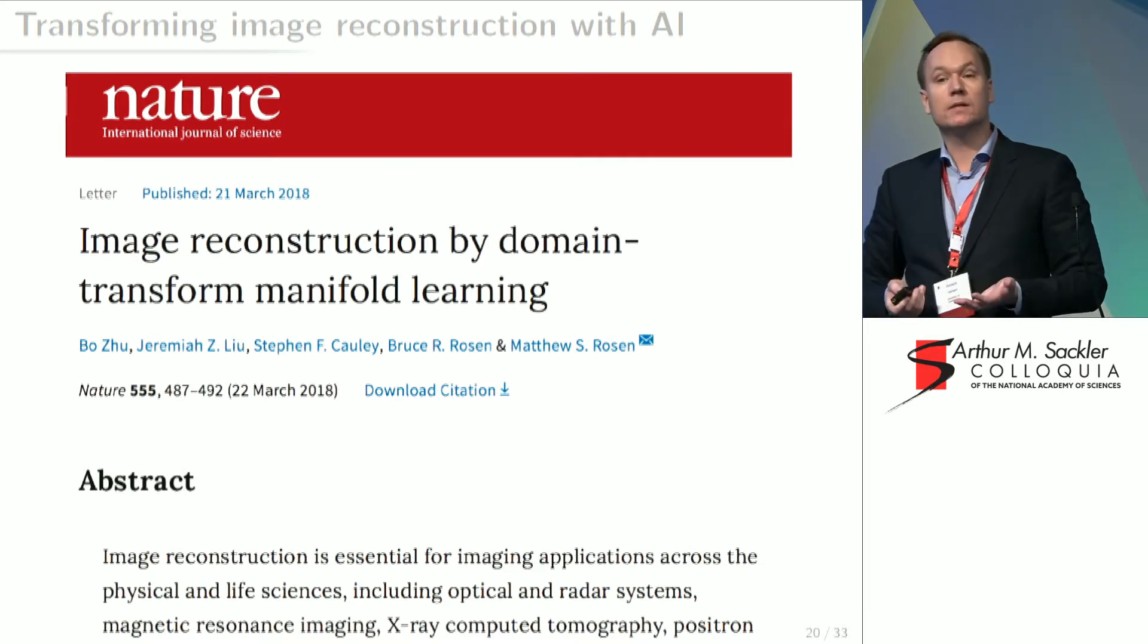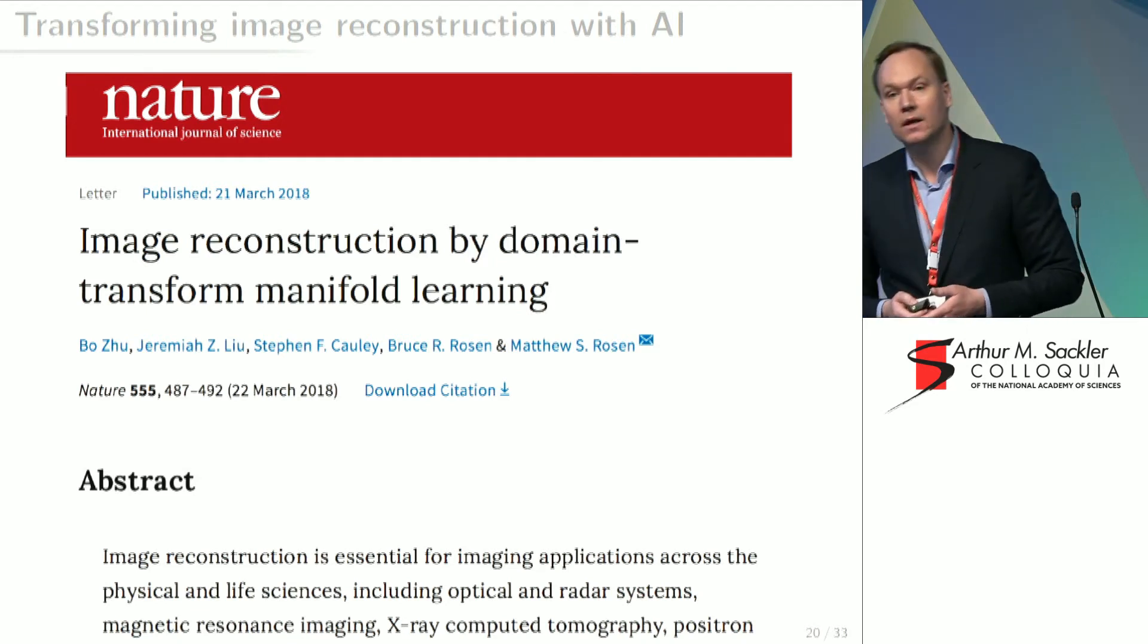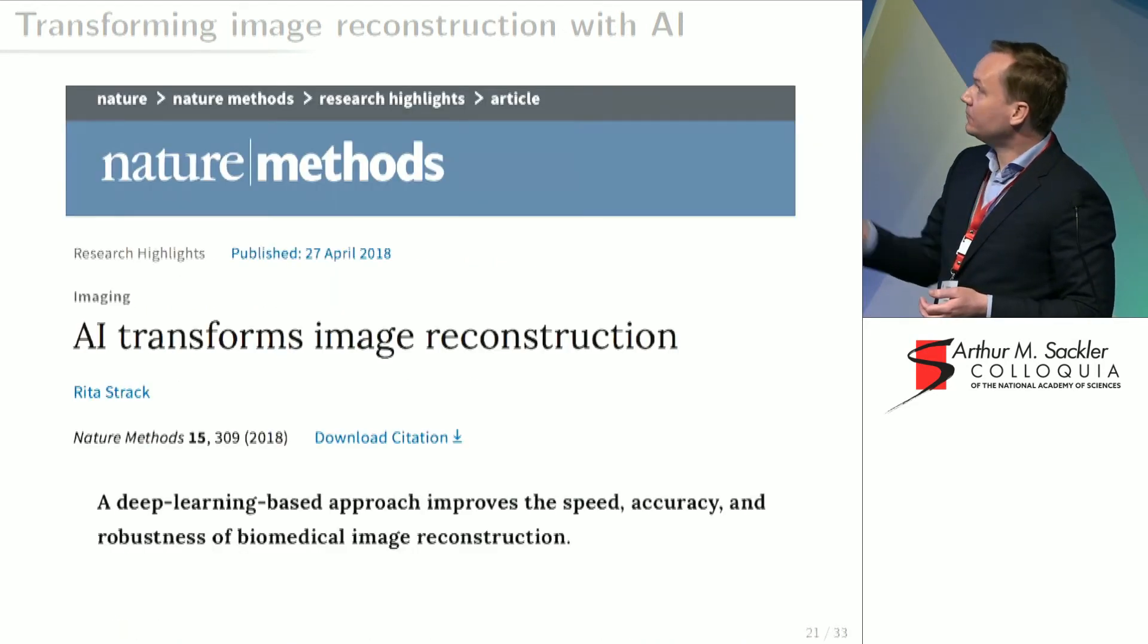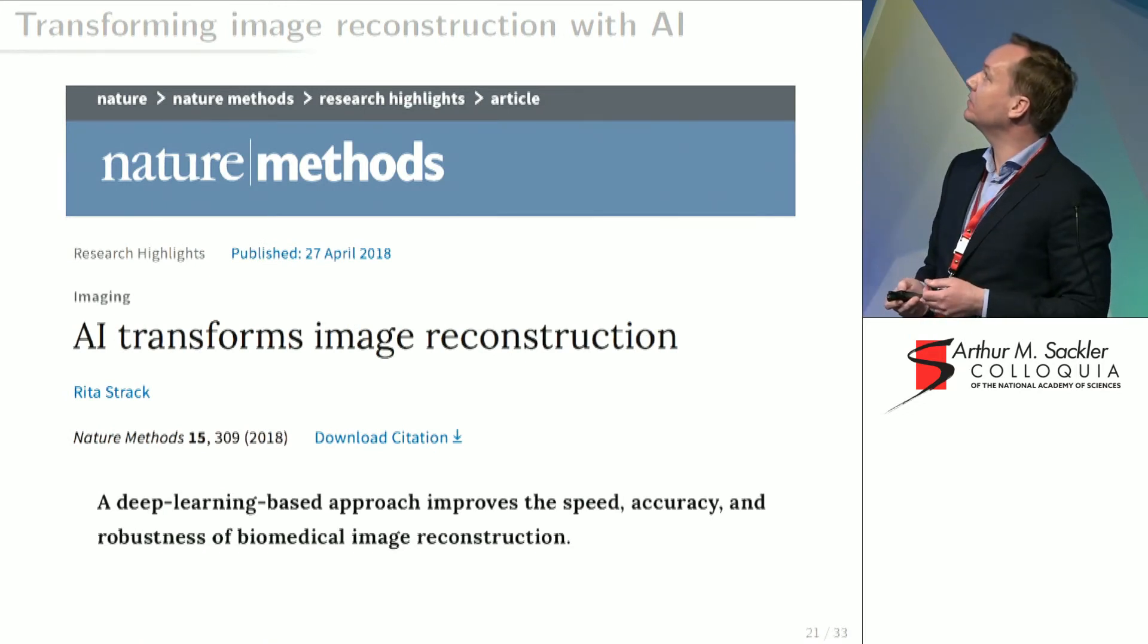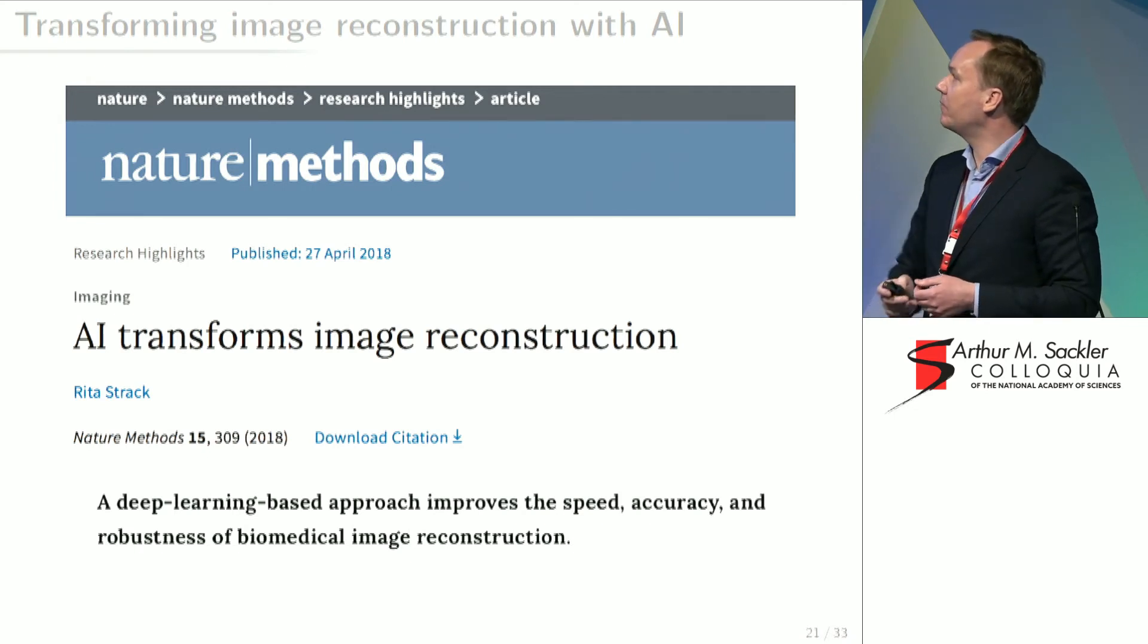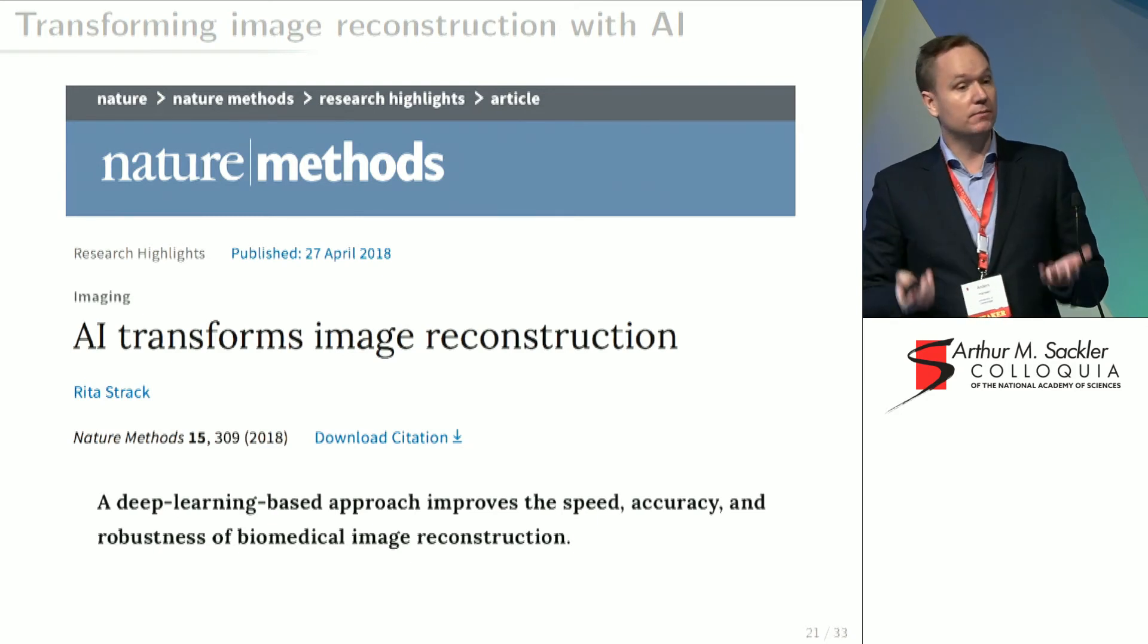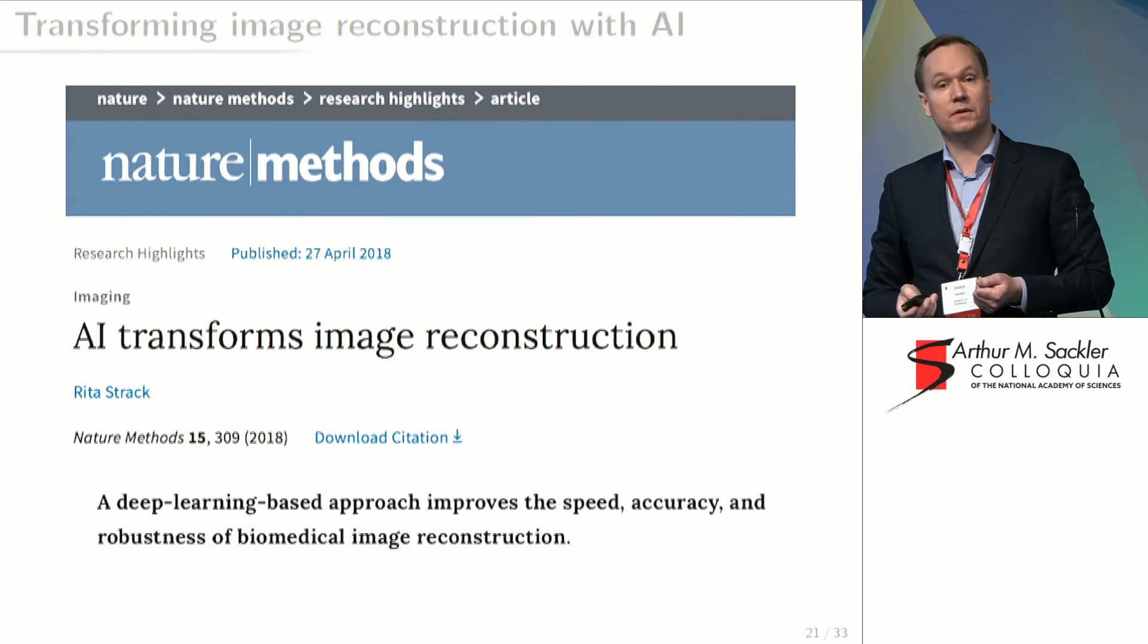I'm going to test another neural network as well. This is a neural network that was published in Nature last spring. It's called Automap. Nature also published a follow-up about this specific network in Nature Methods in their research highlight. And they mention now that AI transforms image reconstruction. And they point out that it improves speed, accuracy, and robustness of biomedical image reconstruction. So it seems reasonable that we test particularly the robustness via this instability test.